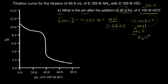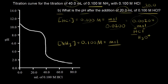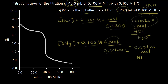Next, what's the concentration of ammonia we started with? It's 0.1 molar. We want to find moles of ammonia. The volume is 40 milliliters, or 0.04 liters. So moles of ammonia equals 0.1 times 0.04, which equals 0.004 moles of ammonia.